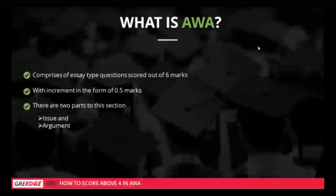A lot of students do not give this section the importance it deserves. Even though they have a very high GRE score of 325, they end up not getting admits from universities that are very skeptical about AWA. The final differentiating factor for students with the same GRE score applying to the same university could be the AWA score. Give at least one hour every day to practicing AWA.